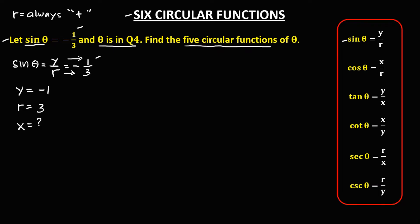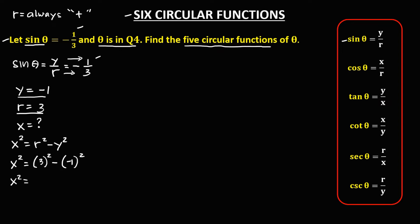To solve for x, since x is the unknown, we use the formula x² = r² − y². Substituting the values: r is positive 3, so 3 squared is 9, minus negative 1 squared, which is positive 1.